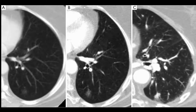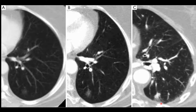Three CT images separated by yearly scans illustrate disease progression. Initially, there is a very vague ground glass nodule. On subsequent imaging, the nodule has slightly increased in size and overall density. On the third scan, the ground glass nodule has again increased in size and developed a part-solid component. This lesion progressed from adenocarcinoma in situ, to minimally invasive, to a frankly invasive pulmonary adenocarcinoma containing both solid and ground glass components.